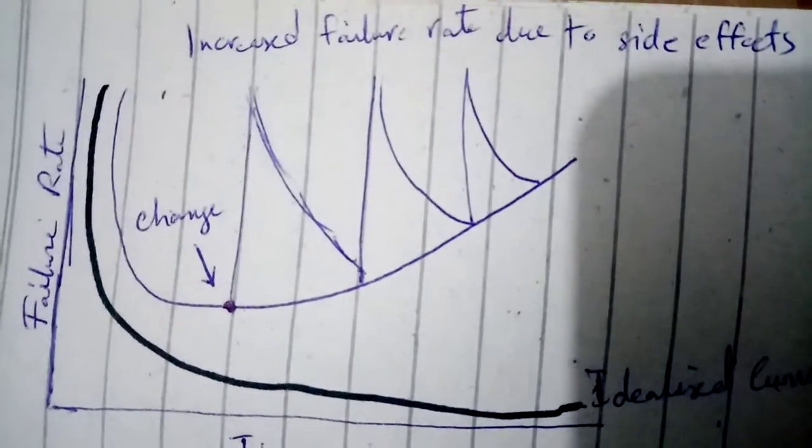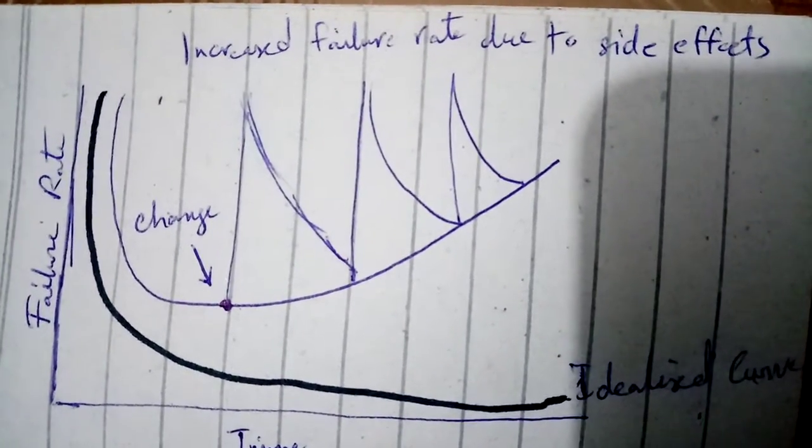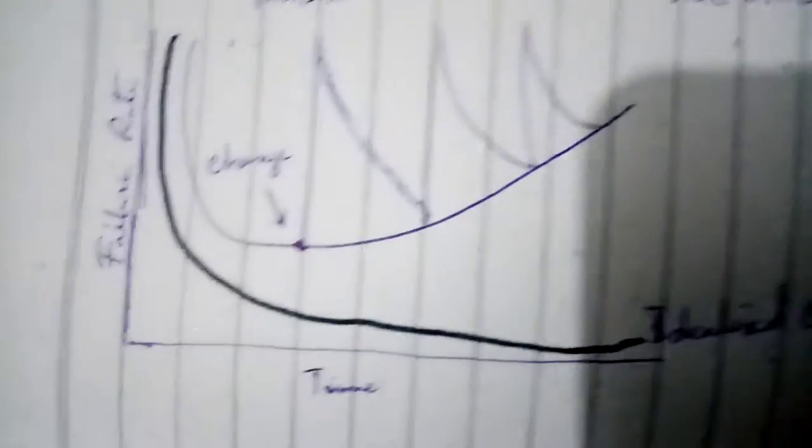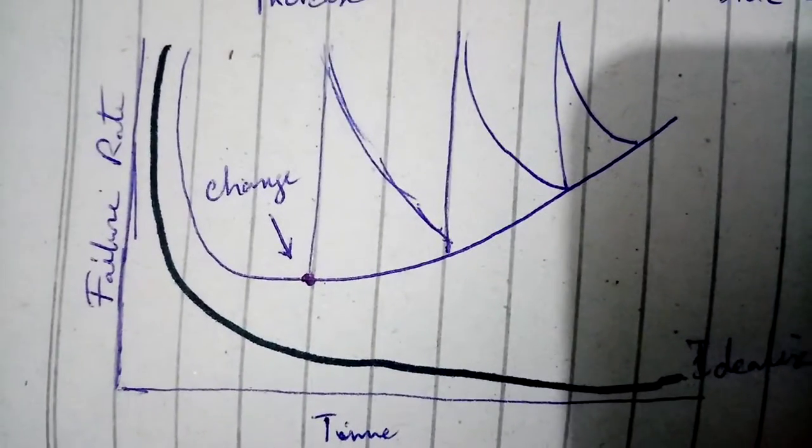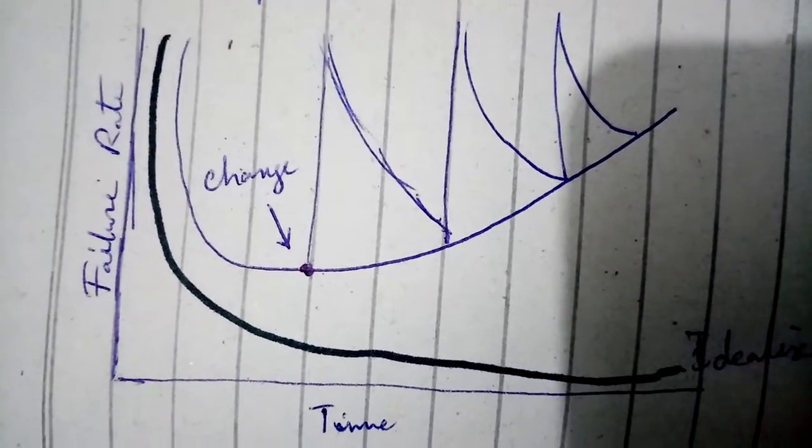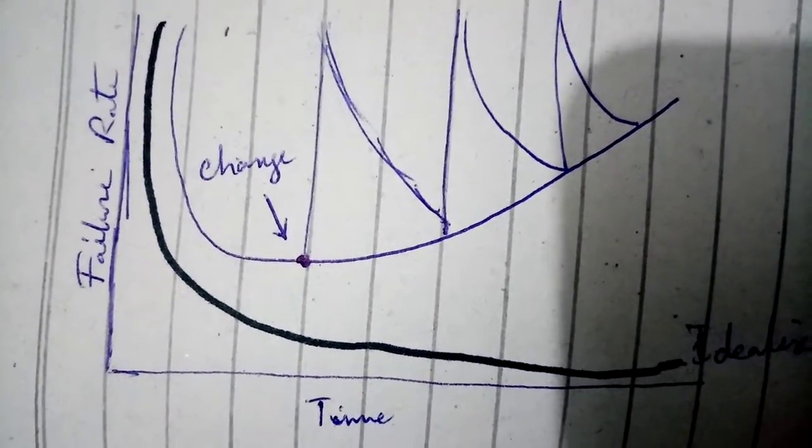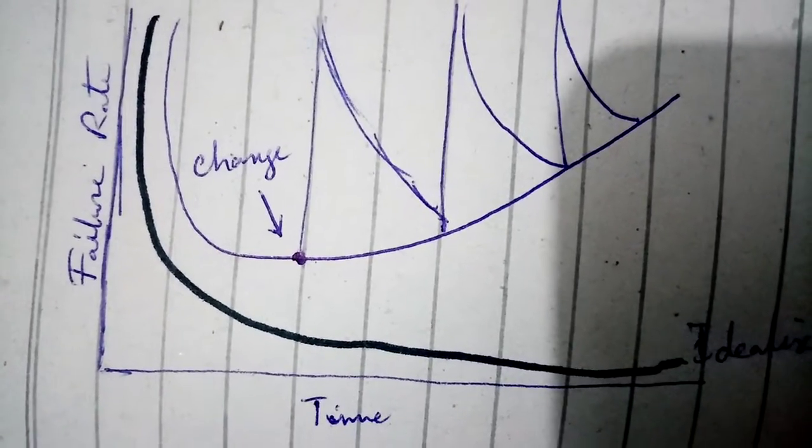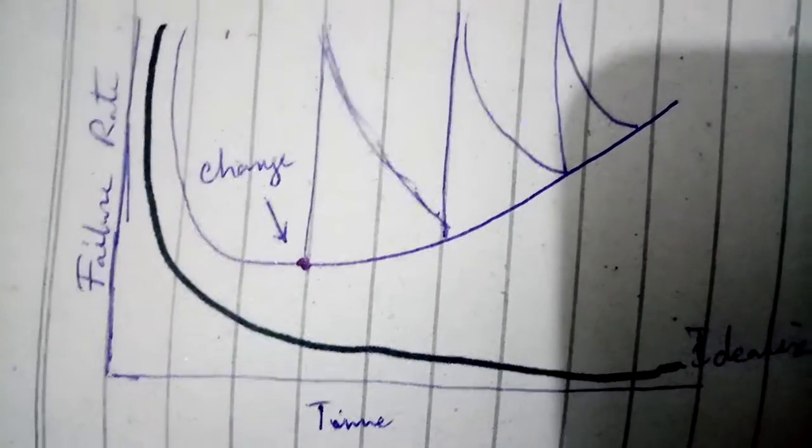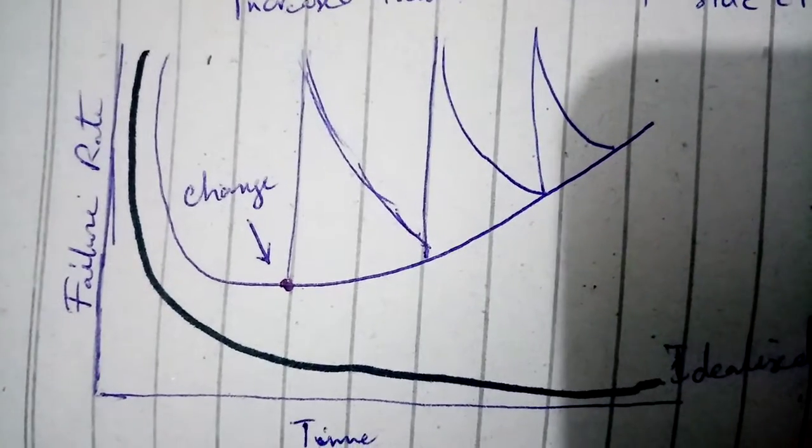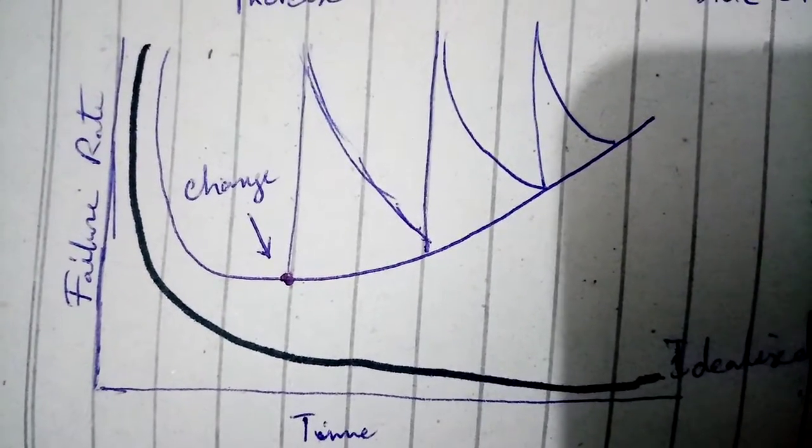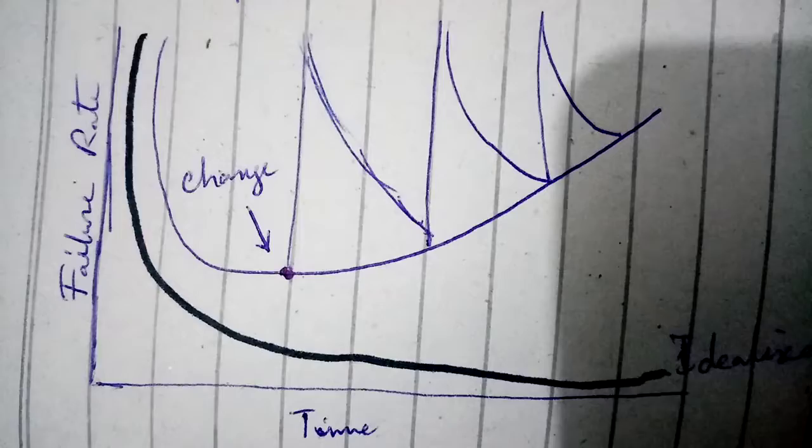In this case there is basically increased failure rate due to side effects. And what are the effects of side effects? Basically your hardware, the temperature of your hardware, the placing, the hardware technology—that also causes failure in software. So software does deteriorate.